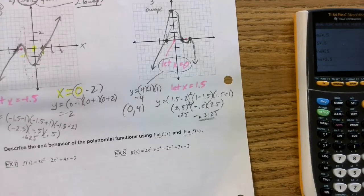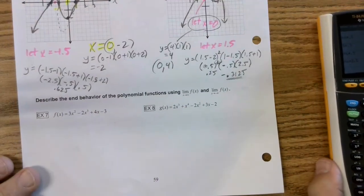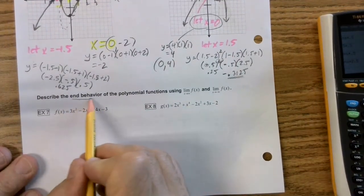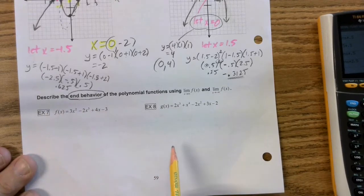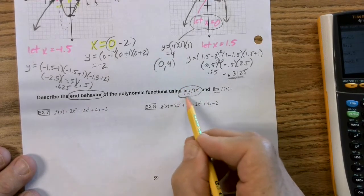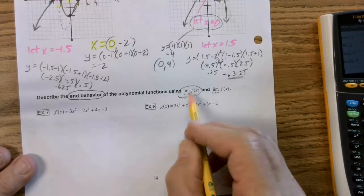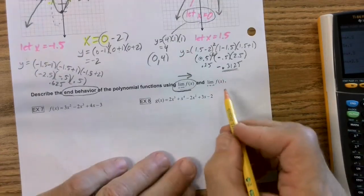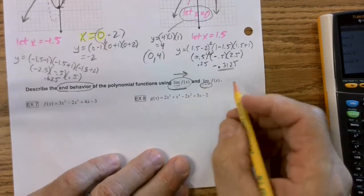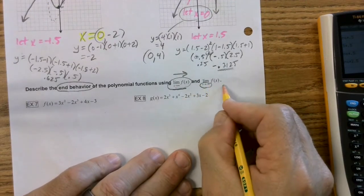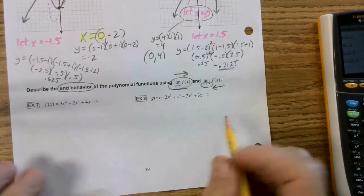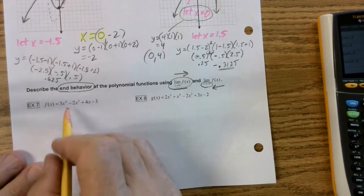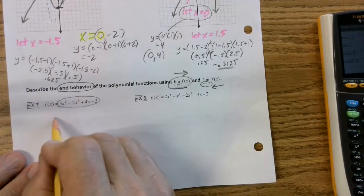And this one gets a lot easier, these last two. So this says describe the end behavior. And this says as x is approaching infinity, which means move left to right. This one says as x approaches negative infinity, so this means right to left.